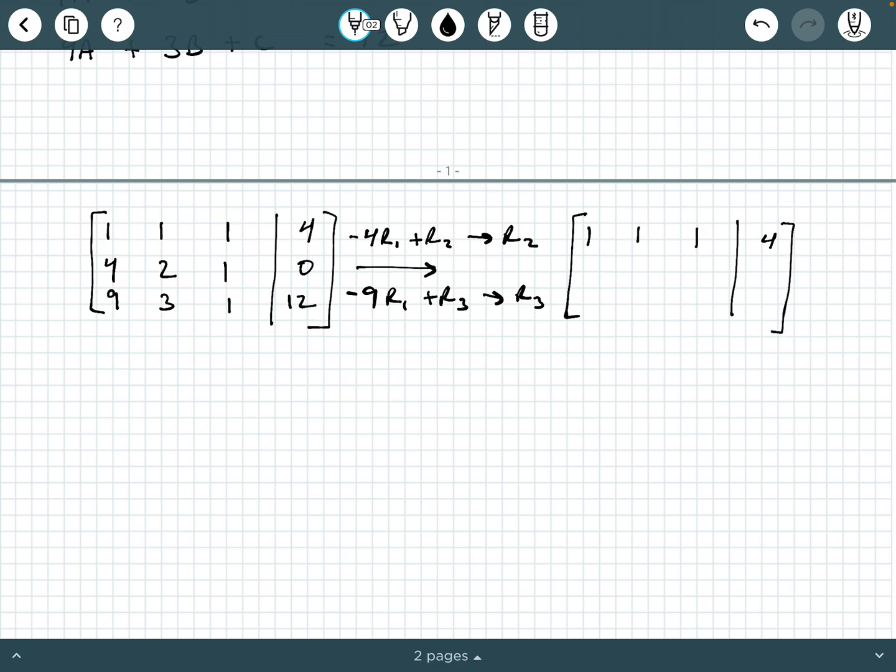And if we look at this first operation, we create a 0 here. And then we'll have, let's see, -4 + 2 is -2. And then -4 + 1 is -3. And then we have -16 here. And then on our second operation here, we're using row 1 to change row 3. So we generate a 0 here. And then we'll have -9 + 3 is -6. Negative 9 + 1 is -8. And then -36 + 12 would be -24 here.